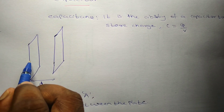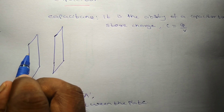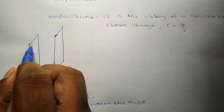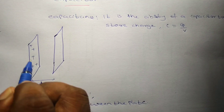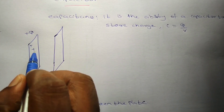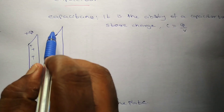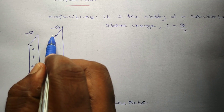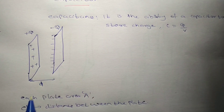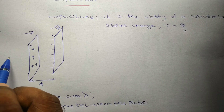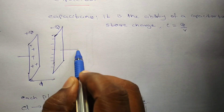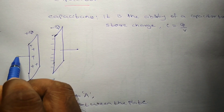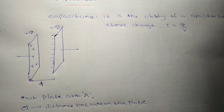What are the charges on the plates? There are positive charges on one plate — we assume a charge of plus Q. There is an equal amount of negative charges accumulated on the other plate — that is minus Q. This is when it is connected to an external circuit.